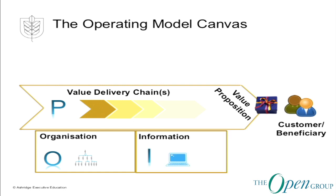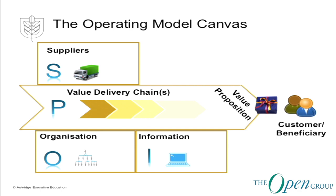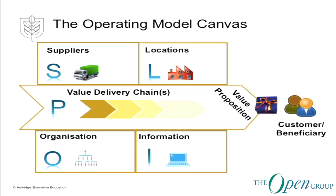The information box is for thinking about the information solutions needed to support the processes delivering the work — and of course some of those processes will themselves be an information step. The supplier box is for thinking about the types of suppliers you need and the sort of relationship you should have with them: whether collaborative, transactional, or a joint venture partnership. The locations box is about where the work is to be done. There are some connections here with TOGAF and the Zachman framework, though I came at this from a business operating model perspective and have become more interested recently in the challenge of IT operating models.